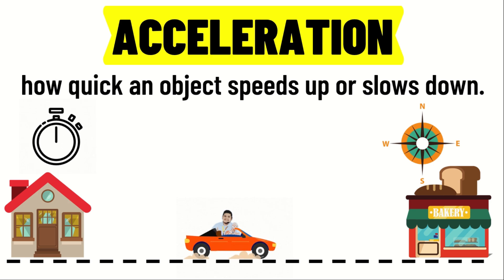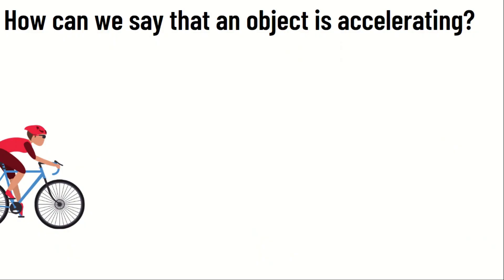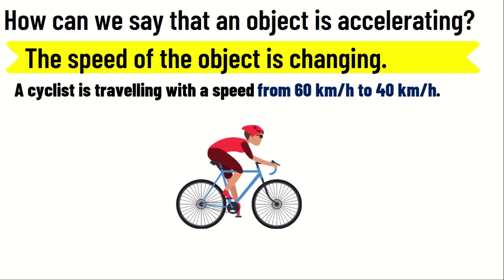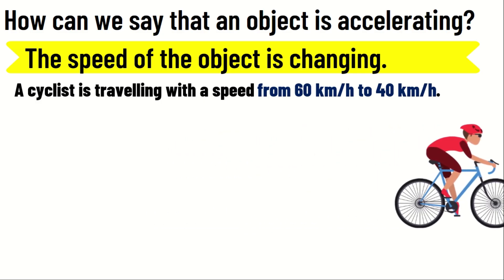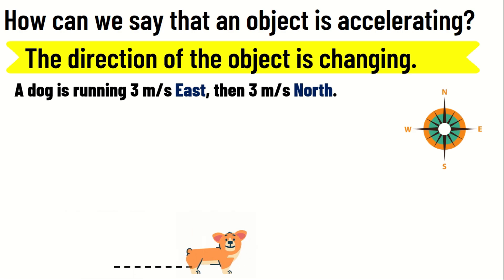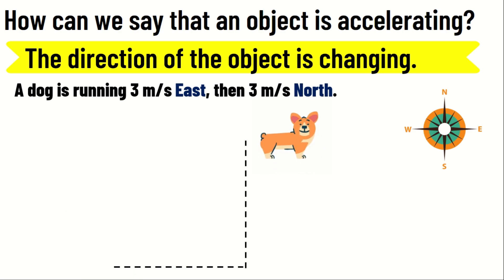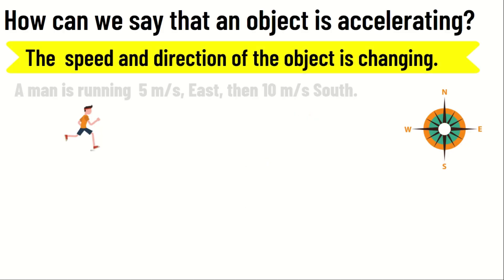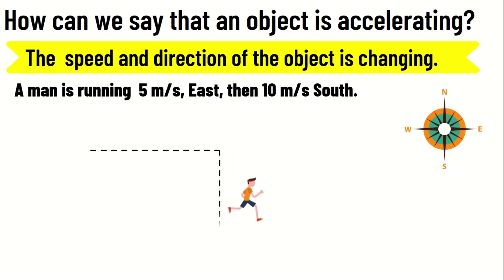But how and when can we say that an object is accelerating? An object is said to be accelerating if it does any of the following. Number one, change of speed — for example, a cyclist is traveling with a speed from 60 km per hour to 40 km per hour. Number two, change of direction — for example, a dog is running 3 m per second east, then 3 m per second north. And number three, change of speed and direction or velocity — for example, a man is running 5 m per second east, then 10 m per second south.